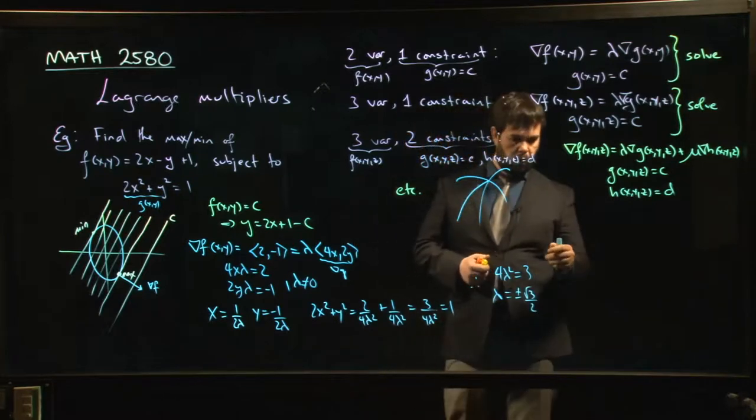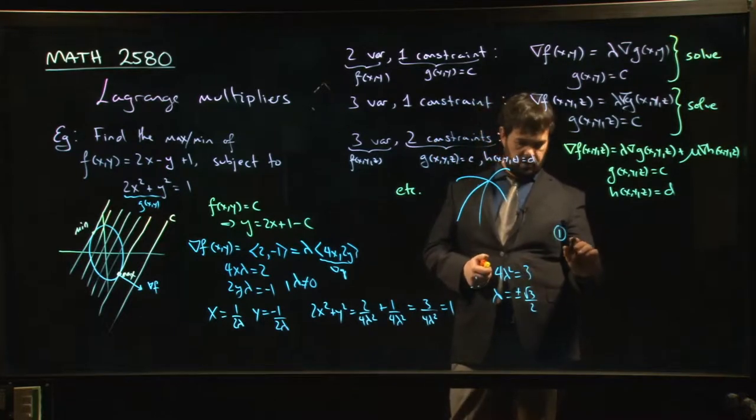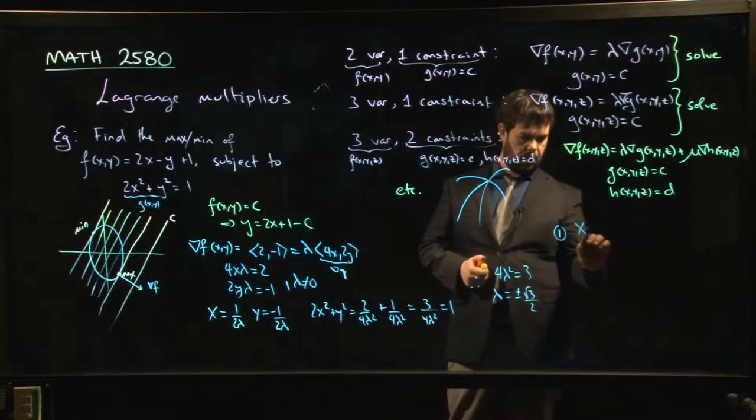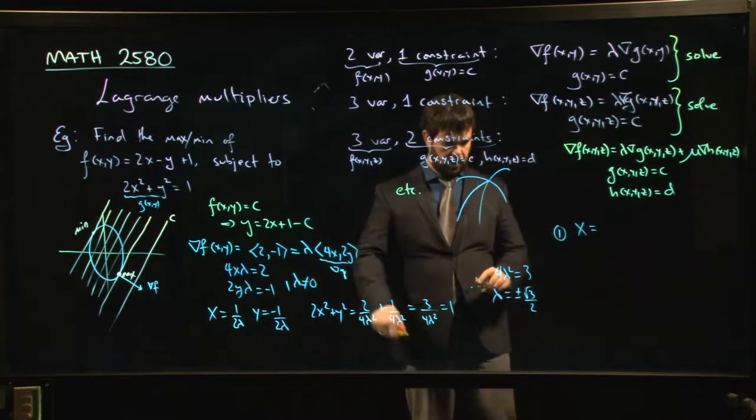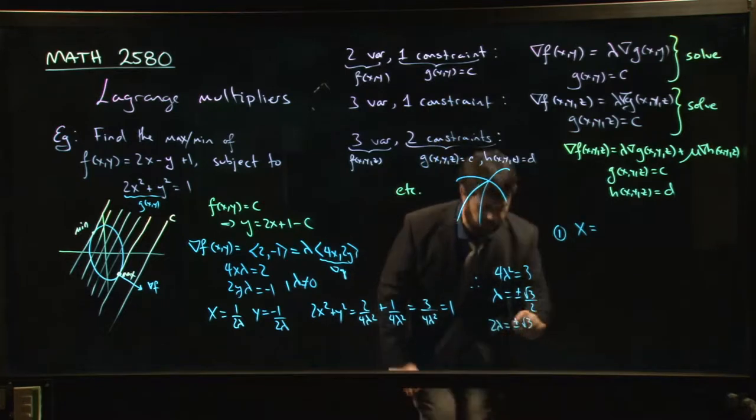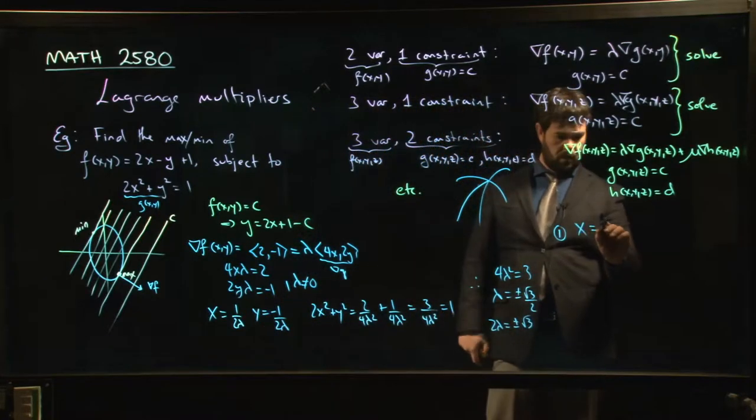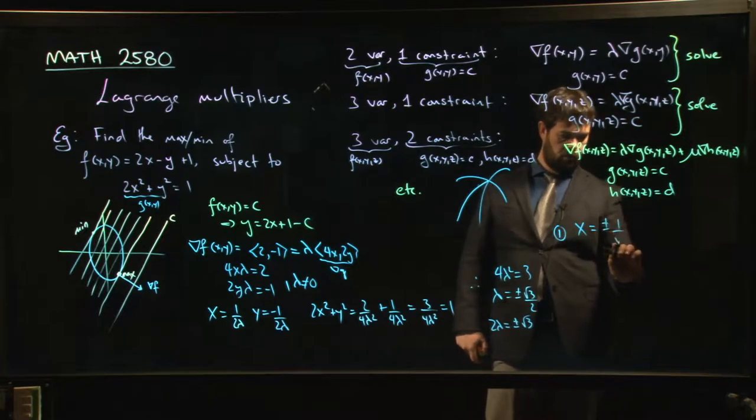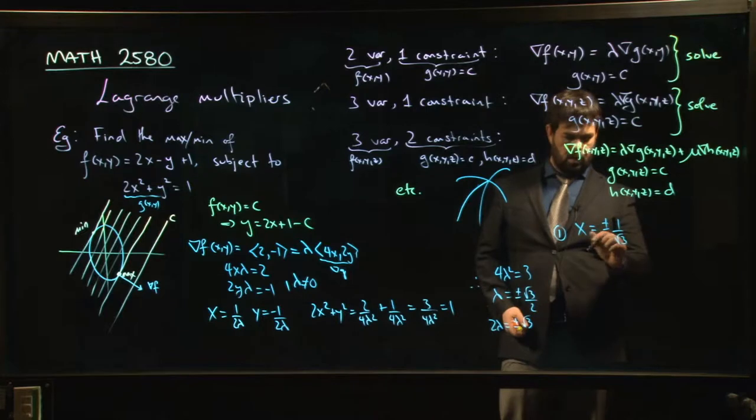So we get two points. First point is going to be x is equal to, so it's 1 over 2 lambda. So 2 lambda is just plus or minus root 3. Because I've got 2 lambda here. So x will be plus or minus 1 over root 3.